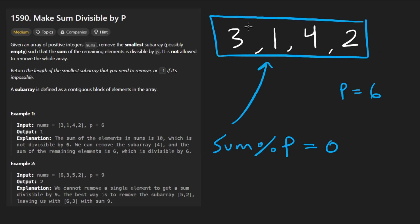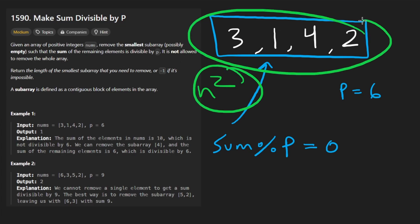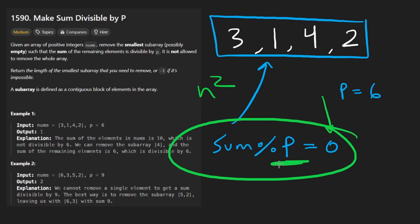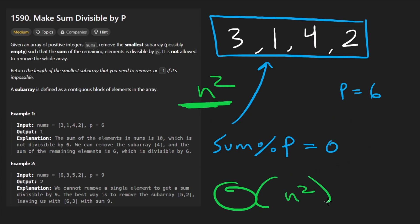Clearly, we would want to consider every possible subarray and consider removing it from the input. There's going to be roughly n squared subarrays. If we have a variable that tracks the total of the input, the total sum, then it's pretty easy for us to just take the total, subtract from it a particular subarray, and then just check if the remainder is divisible by P. We'd find the smallest subarray we could remove that would satisfy that. The time complexity would be n squared.